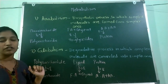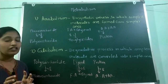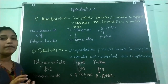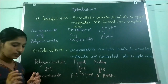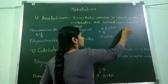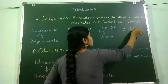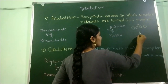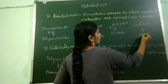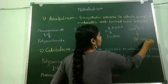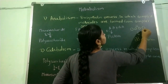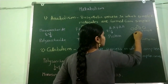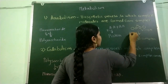Similarly, fatty acids combined with glycerol to form triacylglycerol, and amino acids combine with each other to form proteins. In simple terms, when several simple molecules combine with each other to form complex molecules, this process is called anabolism.